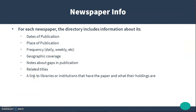All of the information included covers the date of publication, the place of publication, the frequency — whether it was daily, weekly, bi-weekly, etc. — and the geographic coverage. There are even helpful notes about any gaps in publication that could explain why particular issues are missing, any related titles that cover the same geographic area, and links to libraries or institutions that have the newspaper and what their holdings are.